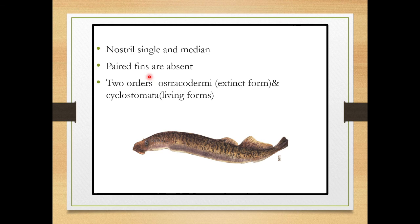Paired fins are absent in Agnatha. There are two orders: Osteostraci, which is an extinct form with no living members, and Cyclostomata, which contains the living forms. An example of Cyclostomata is shown here.